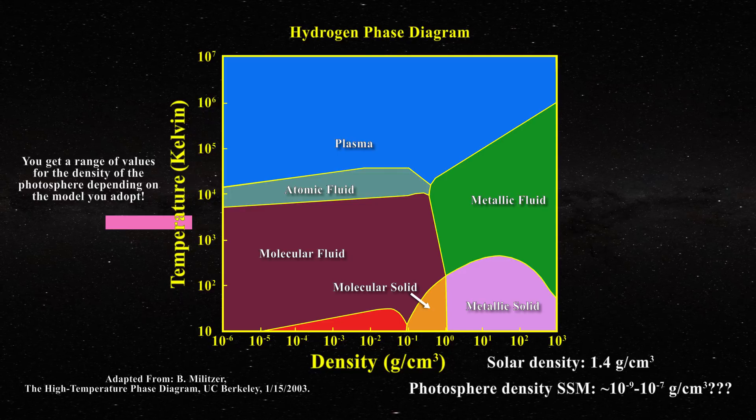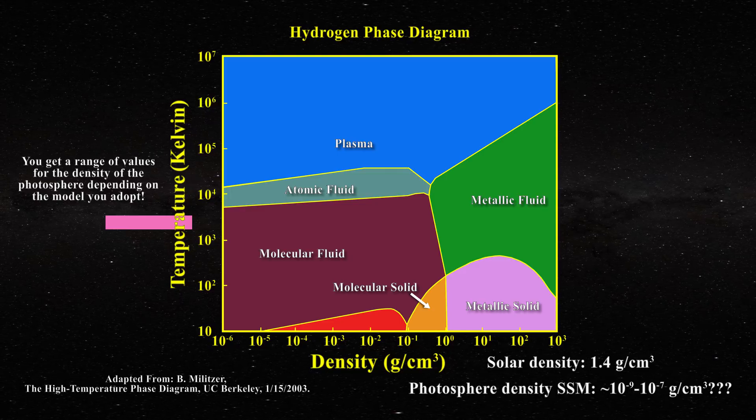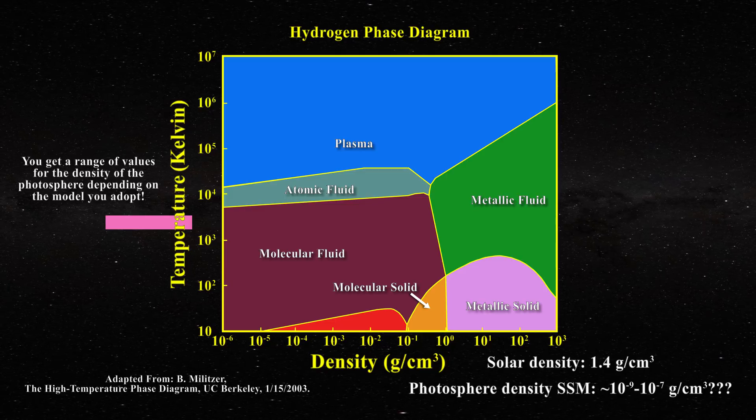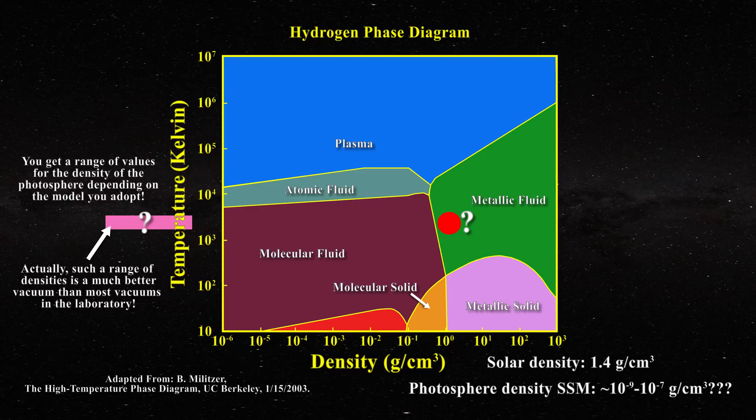Obviously, at such densities, one cannot have a metallic solid or liquid. So the question is, who is correct? Is the photospheric density high or is it almost a vacuum like in the standard solar model?